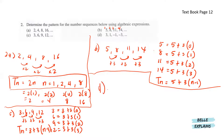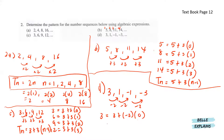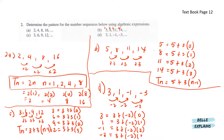Lastly, we have d: 3, 1, negative 1 and negative 3. So in between here we have negative 2, negative 2, which gives us a pattern. 3 equals to 3 plus negative 2 times 0. 1 is 3 plus negative 2 times 1. Negative 1 is 3 plus negative 2 times 2. And lastly, negative 3 is 3 plus negative 2 times 3. So here we can see the pattern Tn equals to 3 plus negative 2 times (n minus 1).